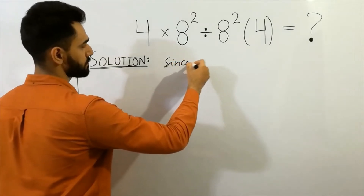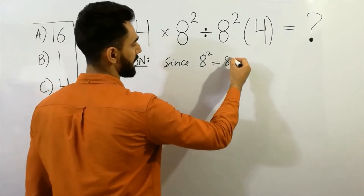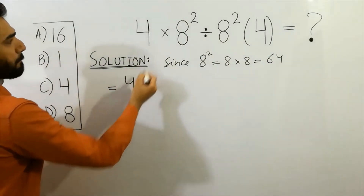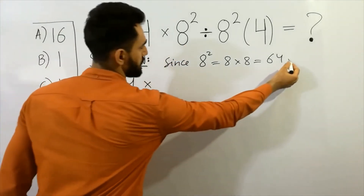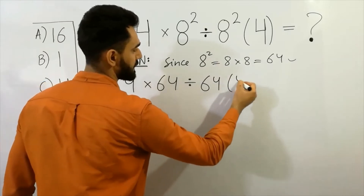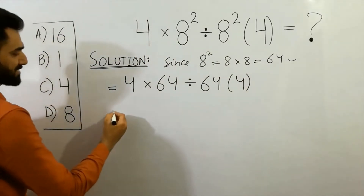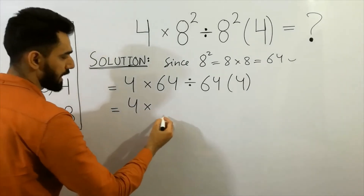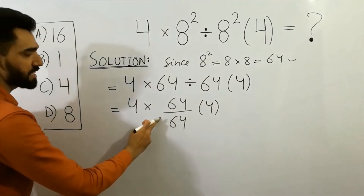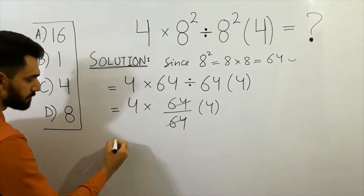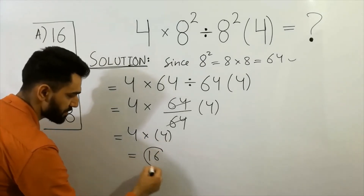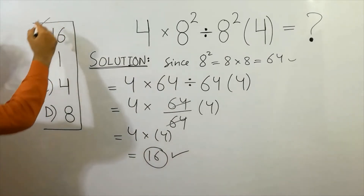Next question: eight squared equals sixty-four. So we write four multiplied by sixty-four divided by sixty-four, bracket four. Division is always first, so sixty-four divided by sixty-four cancels, giving four multiplied by four, which equals sixteen. So sixteen — option A is correct.